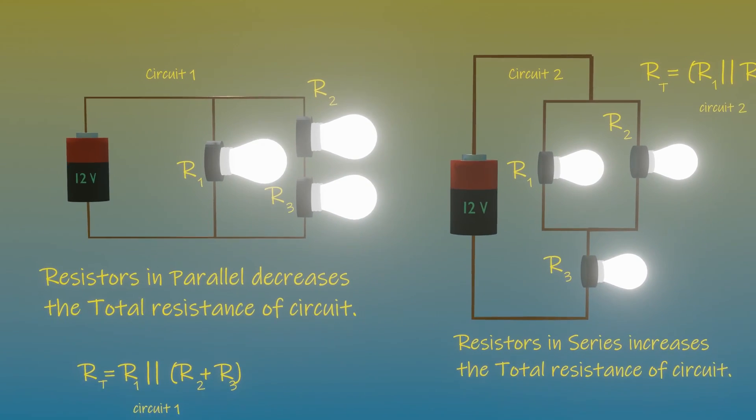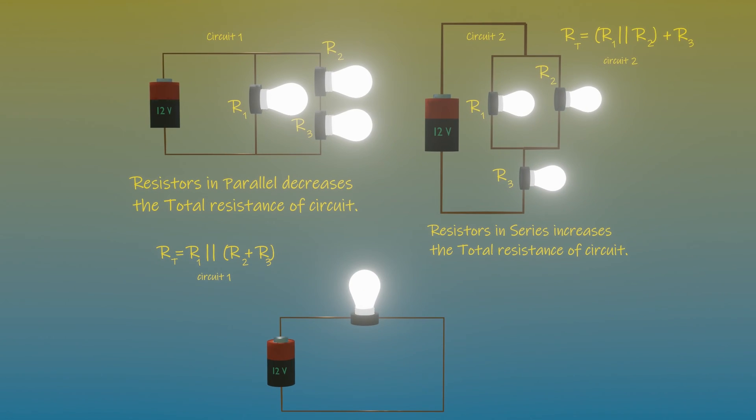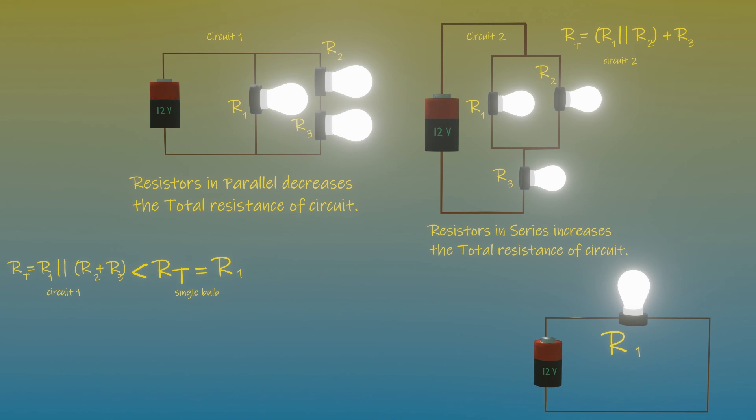Compare these two circuits with the resistance circuit of a single bulb. We can see that circuit one must have an overall resistance of less than the resistance of a single bulb. And circuit two must have a resistance greater than the resistance of a single bulb.